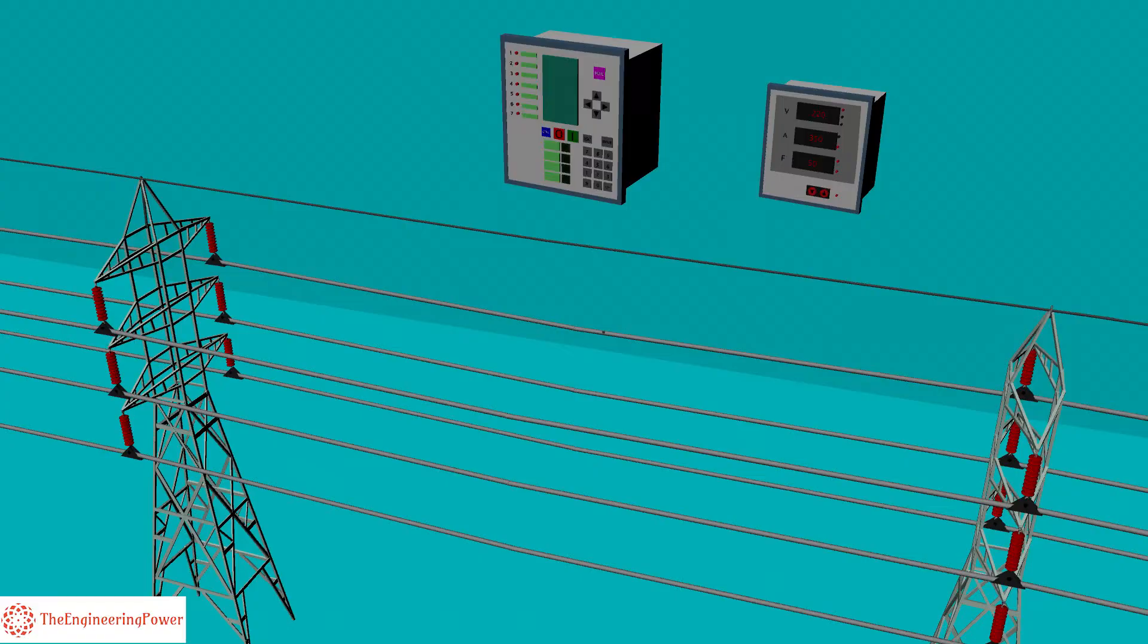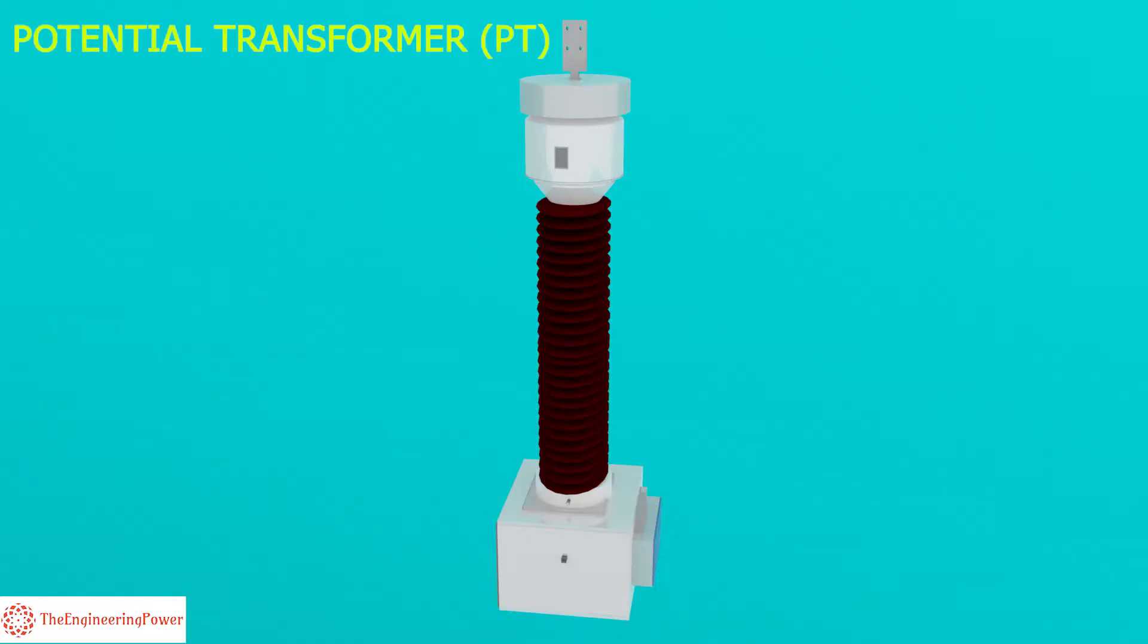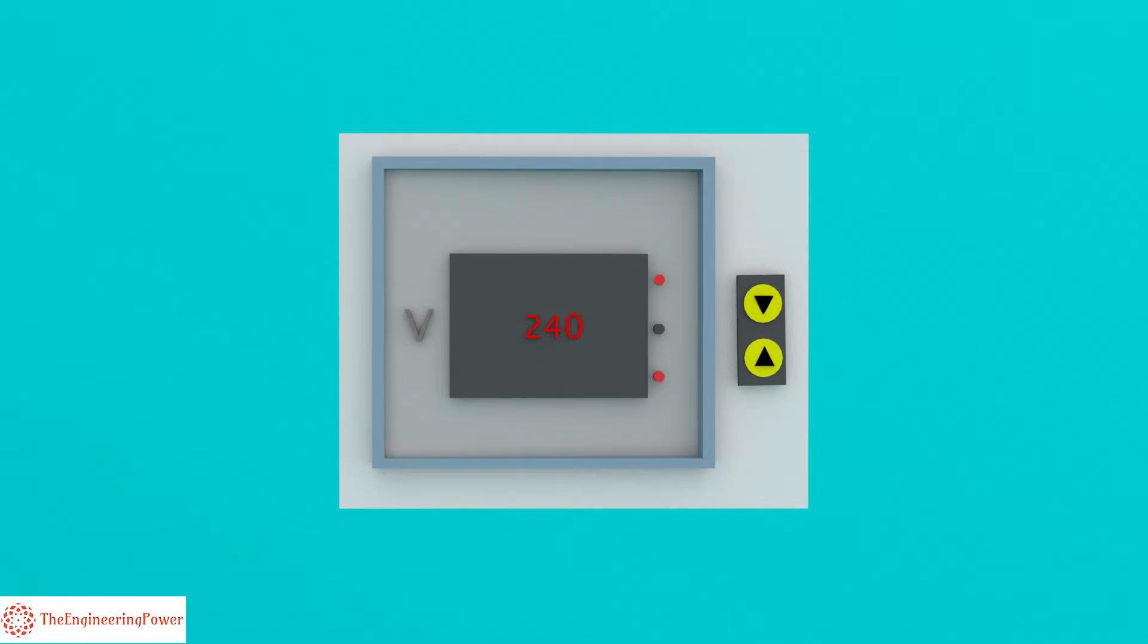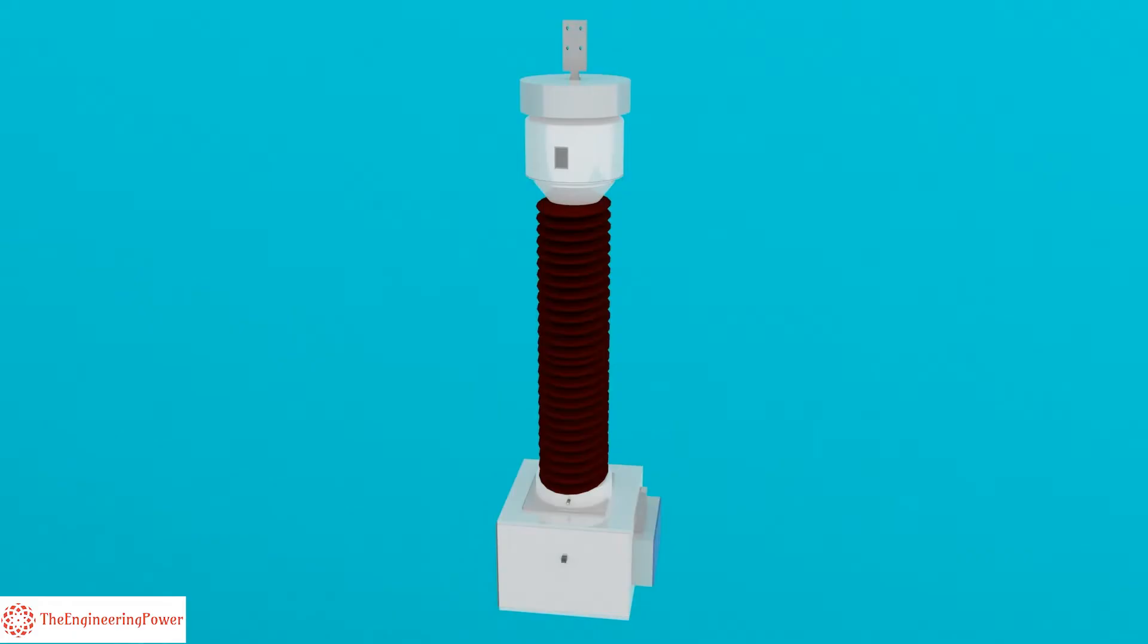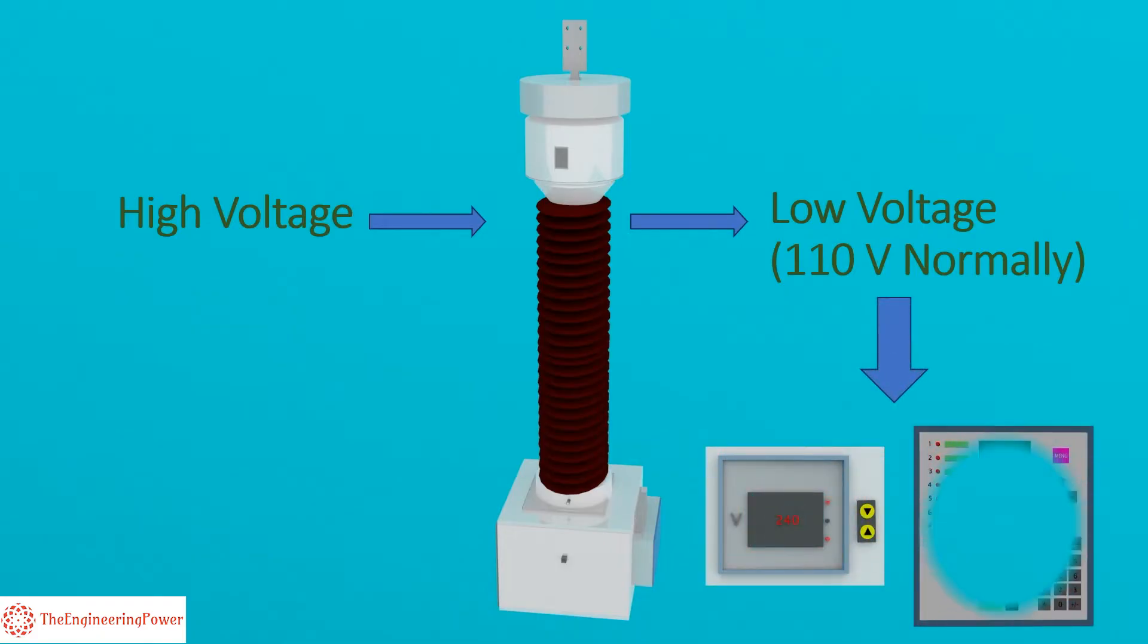This special transformer is called a potential transformer or simply PT. Standard voltmeters can then be used to measure this voltage. PT transforms voltage to safe value, normally 110 volts. This voltage can be fed to low rating meters and relays in the control room.